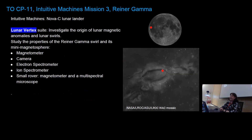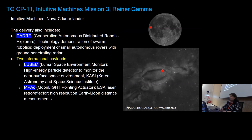Our first CLPS PRISM instrument suite headed towards the moon is going to Reiner Gamma on Intuitive Machines Mission 3. That has a suite of instruments designed to investigate the origin of lunar magnetic anomalies and lunar swirls, in particular the properties of the Reiner Gamma swirl and its mini magnetosphere. Also on this lander is a technology demonstration of a swarm of robotics — small autonomous rovers with GPRs called CADRE — plus two international payloads: a high-energy particle detector from Korea and a large lunar laser retroreflector from ESA.